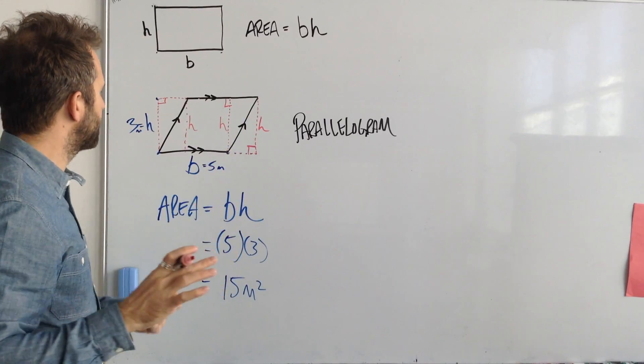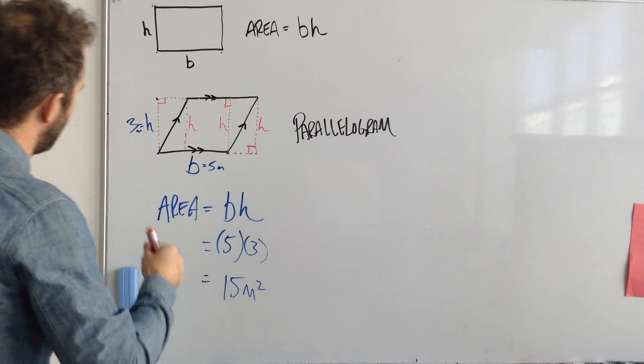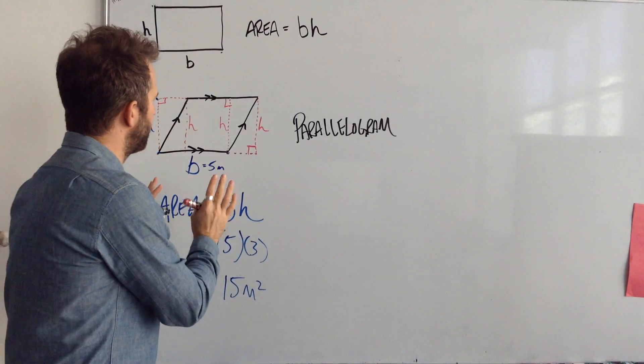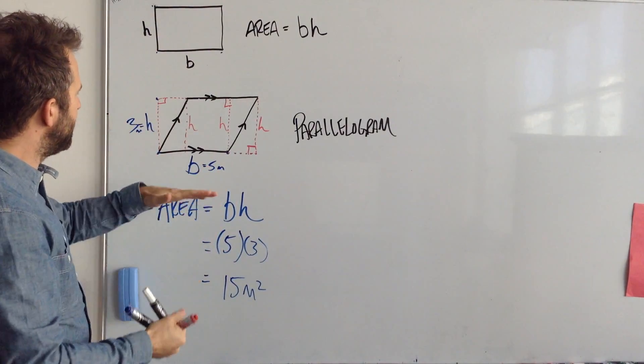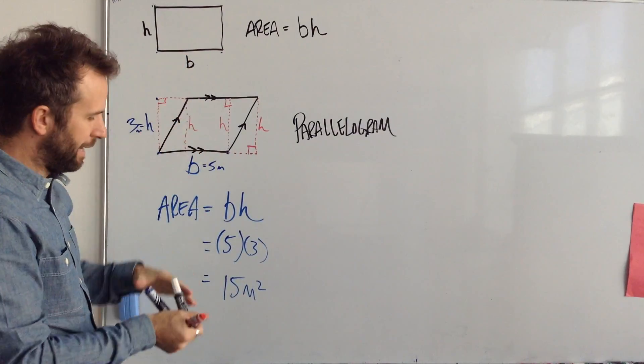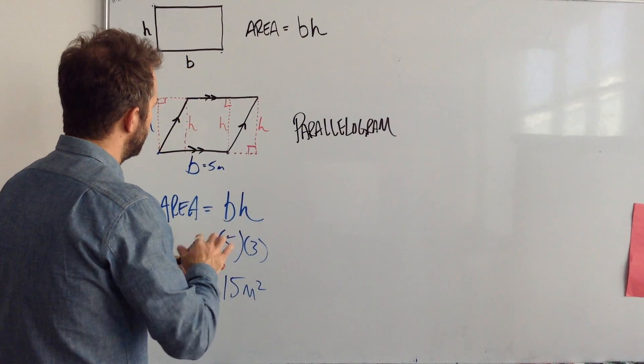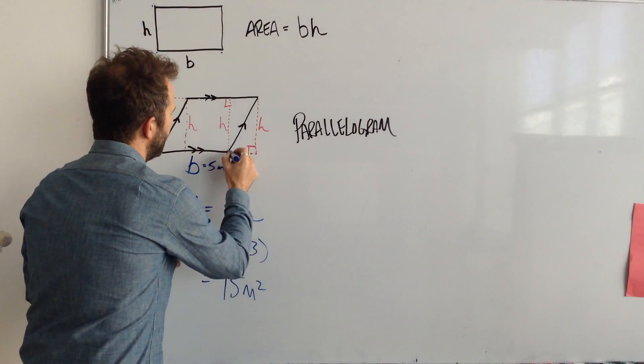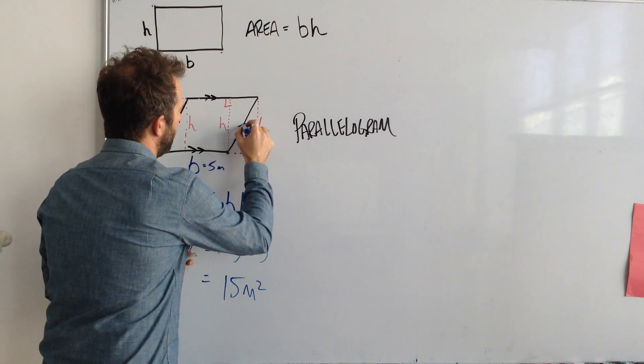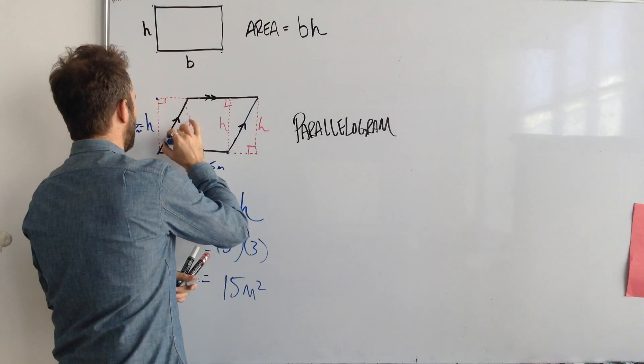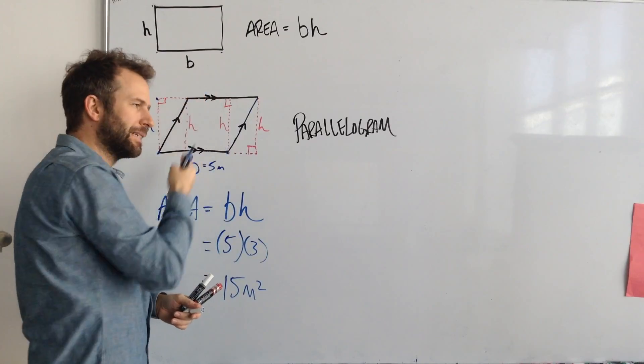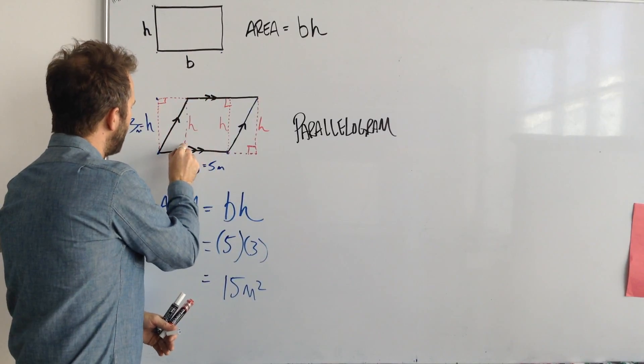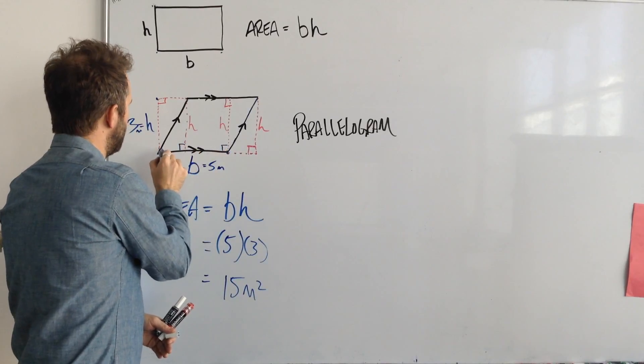The only other thing to consider here is the idea that the area of a parallelogram is determined by that h and not the distance along the line itself. So not this distance here and not this distance here. It has to be that perfect right angle from the base.